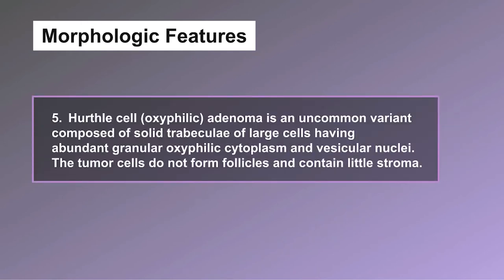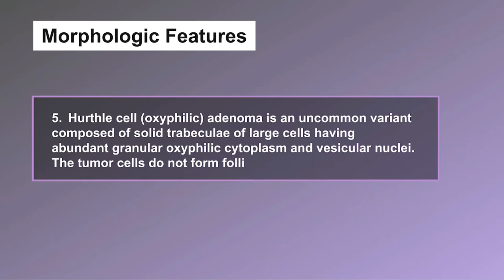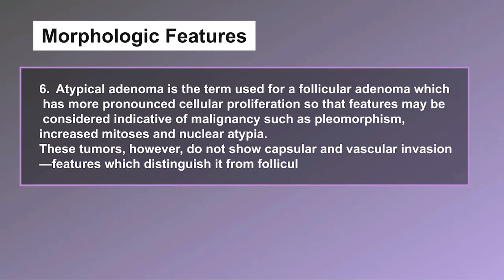Type 5: Hürthle cell (oxyphilic) adenoma is an uncommon variant composed of solid trabeculae of large cells having abundant granular oxyphilic cytoplasm and vesicular nuclei; the tumor cells do not form follicles and contain little stroma. Type 6: atypical adenoma is the term used for a follicular adenoma with more pronounced cellular proliferation, showing features that may be considered indicative of malignancy, such as pleomorphism, increased mitosis, and nuclear atypia.